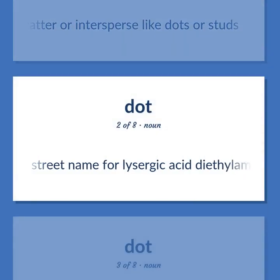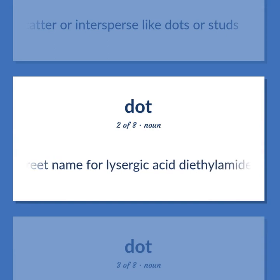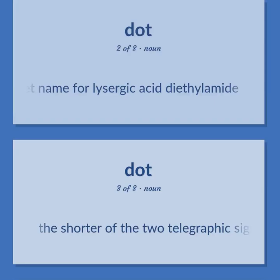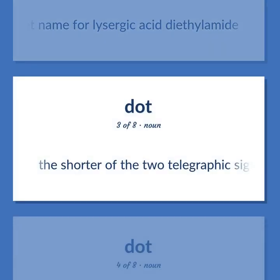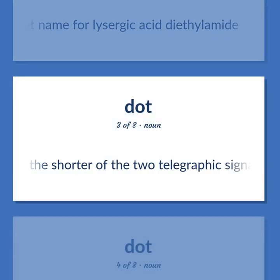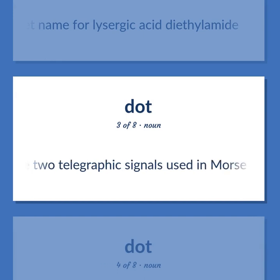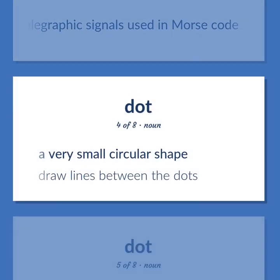Dot: Street name for lysergic acid diethylamide. The shorter of the two telegraphic signals used in Morse code. A very small circular shape. Draw lines between the dots.